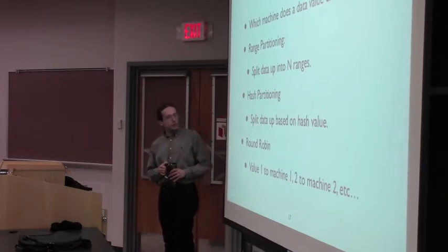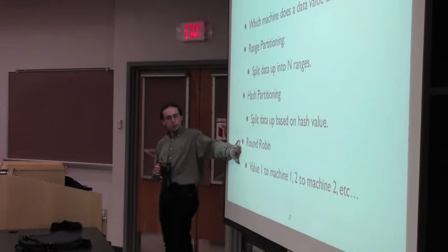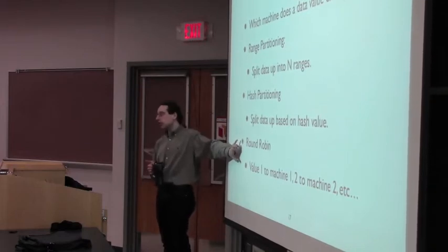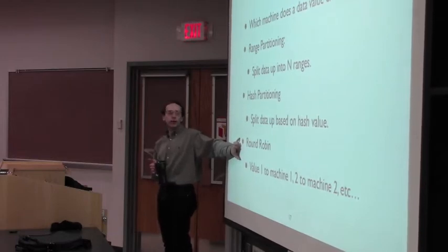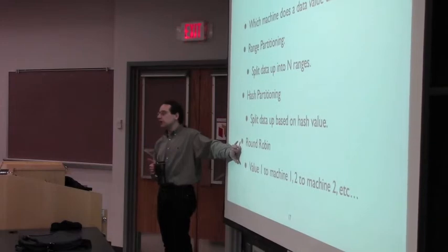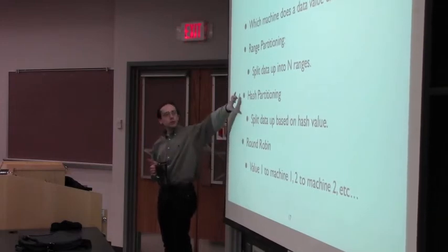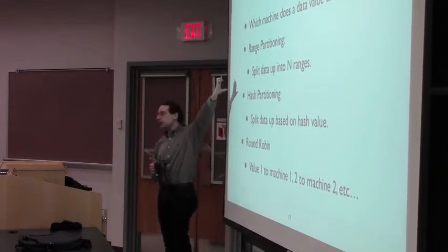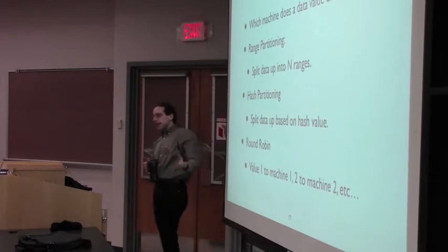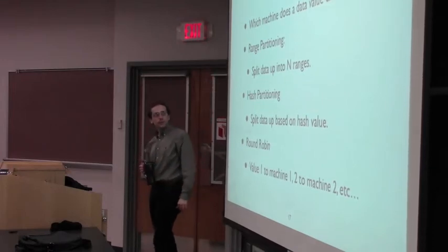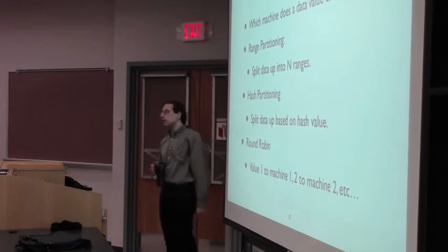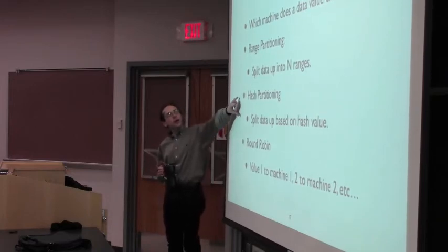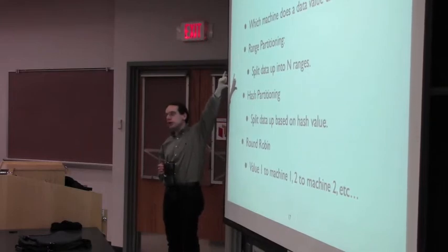So round robin basically provides the equal distribution of data to the nodes. Sorry. Could you be quiet. Speak up. So round robin provides the equal distribution of data to the nodes. Exactly. So round robin will put exactly the same number of, to within one, to within one tuple, exactly the same number of tuples on each machine, on each node.